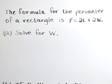The formula for the perimeter of a rectangle is P equals 2L plus 2W. That's perimeter is equal to 2 times the length plus 2 times the width.